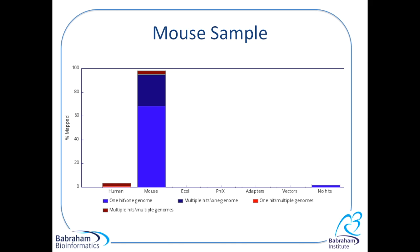The graph shows the proportion of the reads which mapped against which dataset. And as you can see quite clearly the results do seem to show that this is a mouse sample. Nearly 100% of the reads mapped against the mouse genome.